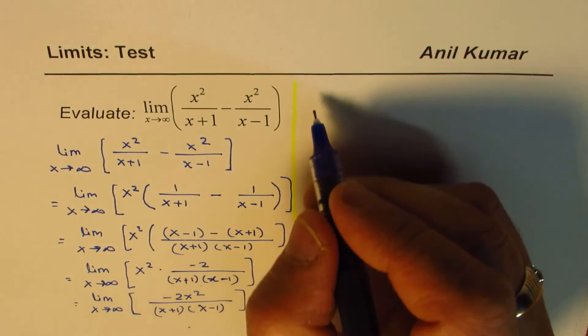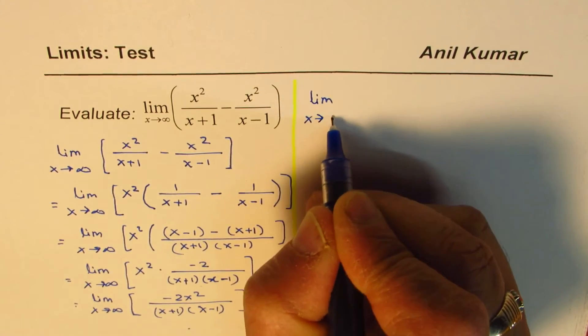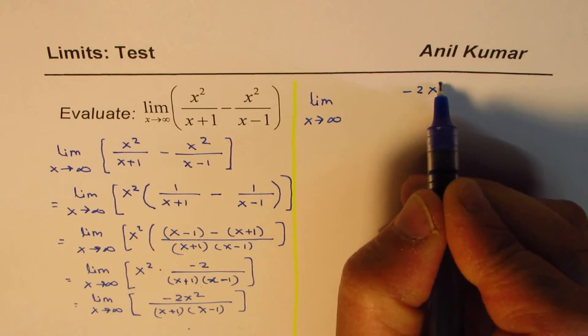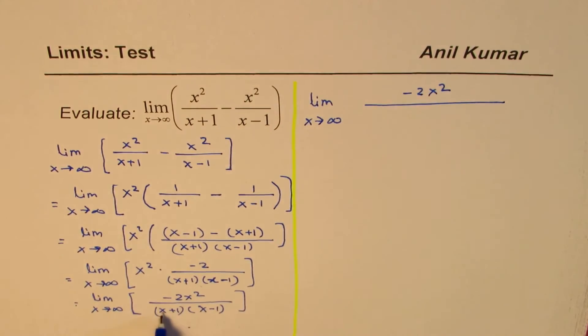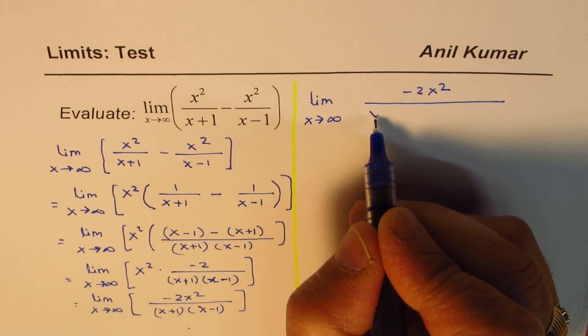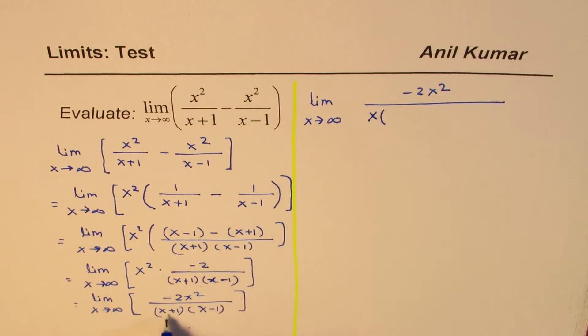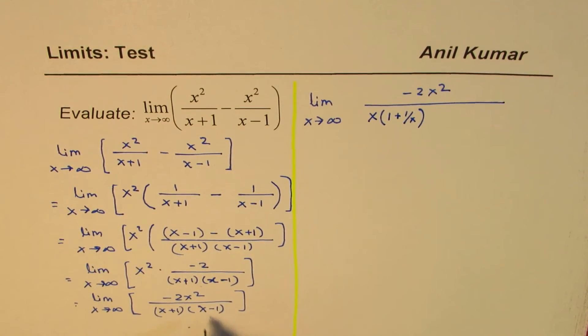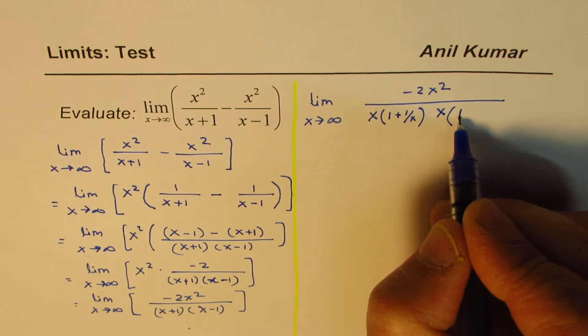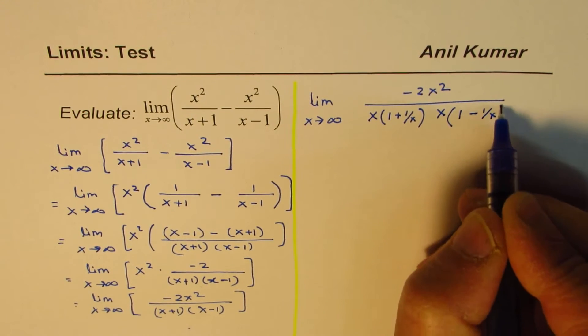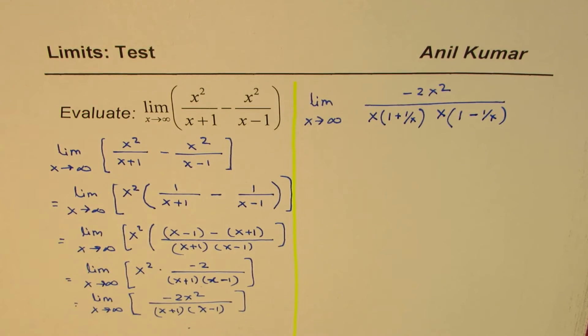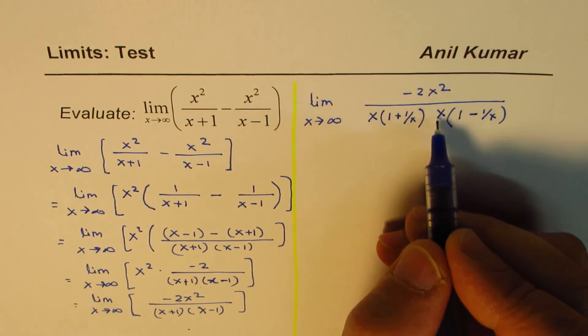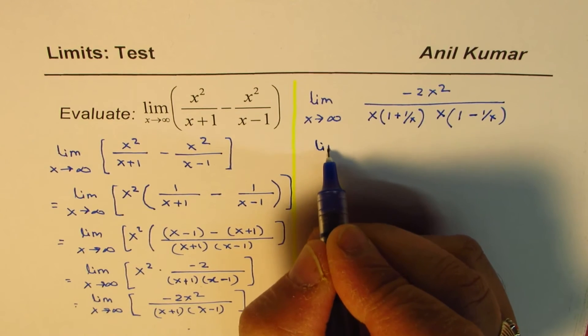So now here, I'm going to show you a technique of factoring out x and then simplifying this. So I'm just copying this question here. We have limit x approaches infinity of minus 2x squared divided by x plus 1. I could take x common and write this as 1 plus 1 over x. Similarly here, I could take x common and take 1 minus 1 over x. Factor out x in the denominator. Why did we do so? Because we want to cancel out these x squares.